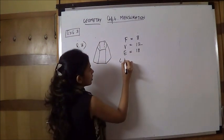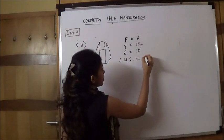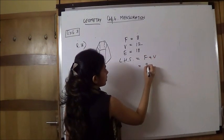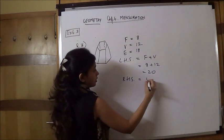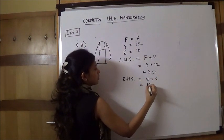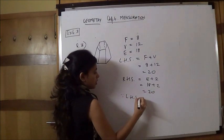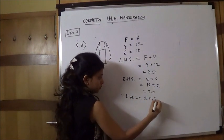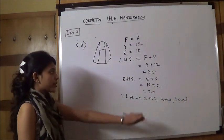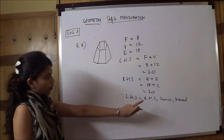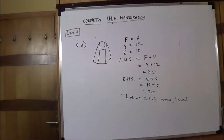Now we will verify LHS separately and RHS separately, because you are asked to verify, not find out either of the values. So what is LHS? F plus V: 8 plus 12, which is 20. And RHS: E plus 2, so 18 plus 2 is 20. So since LHS equals RHS, hence verified. And definitely always LHS and RHS will be equal because Euler's formula is valid for all types of polyhedrons.